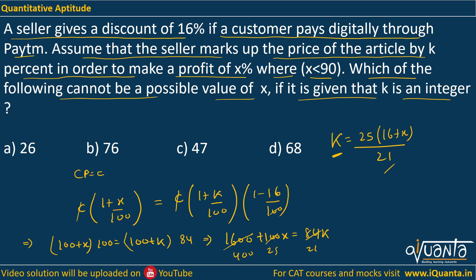So x can be 5, it should be a multiple of 21. Next value can be 26, next value can be 47, next value can be 68. But 76, if you put x equal to 76 you will not be getting an integer value of k, so 76 is not possible. Option b will be the correct answer.